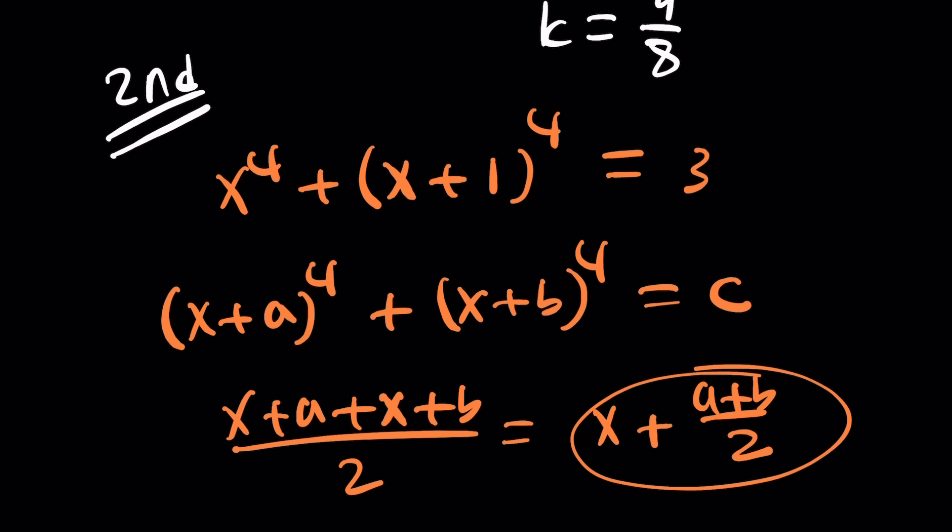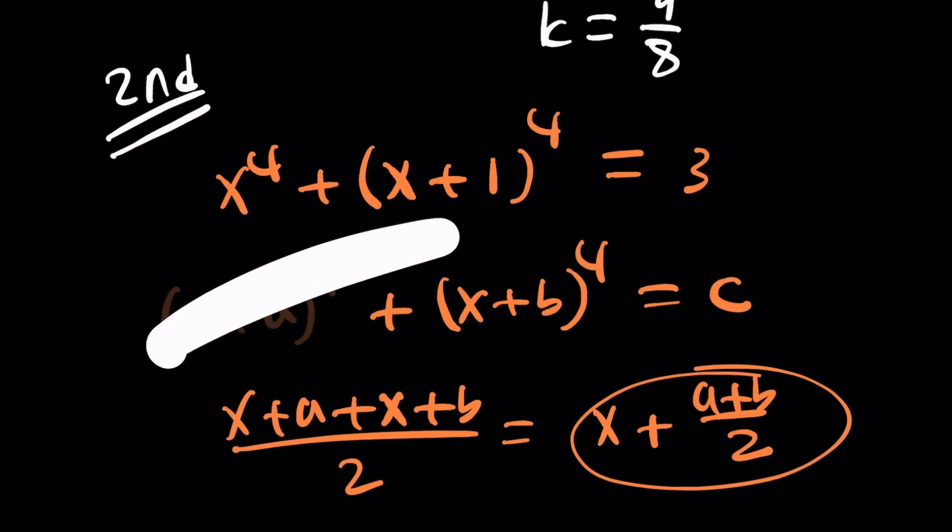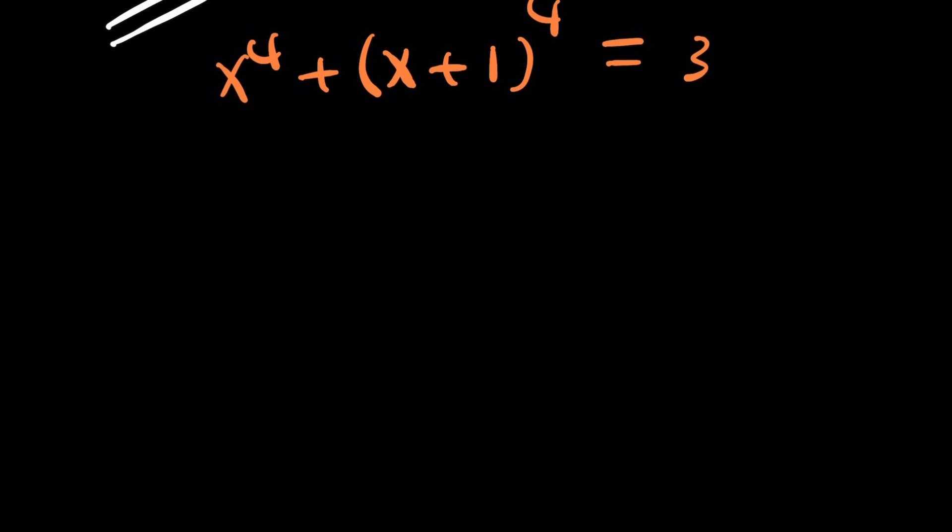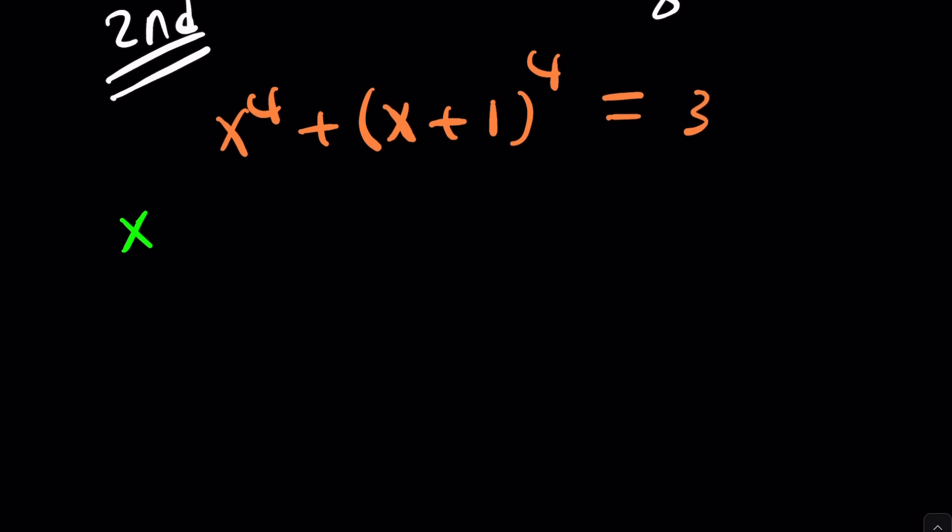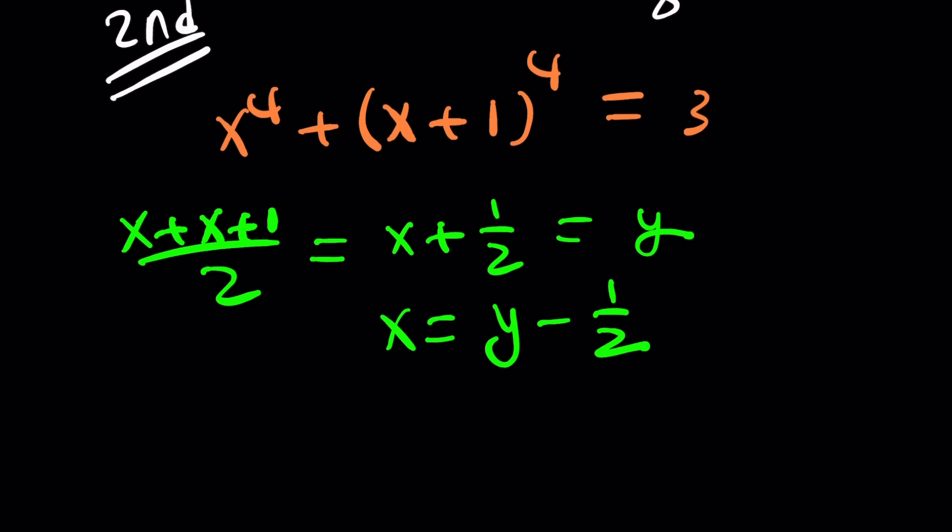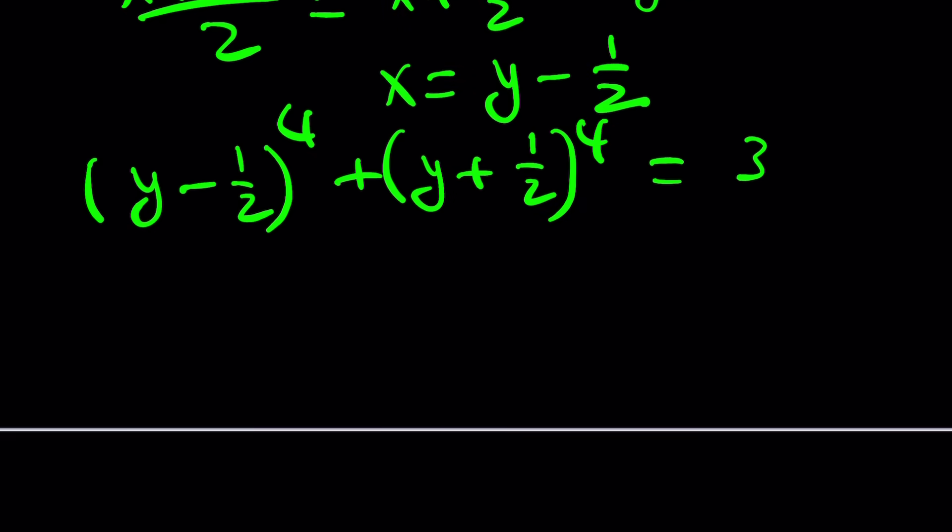We're going to go ahead and average these two terms. That'll be x plus one half, and that'll be your new variable y. In other words, you're replacing x with y minus one half. Because what it does from symmetry is, this will be y minus one half, and this will be y plus one half. You can take advantage of the binomial theorem. Those are kind of conjugates.